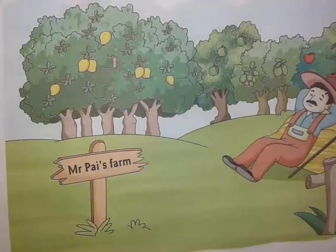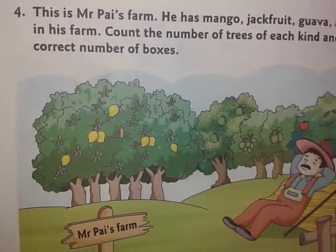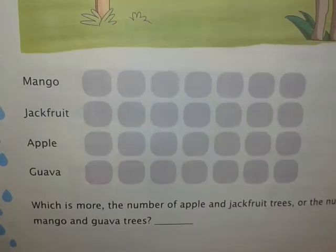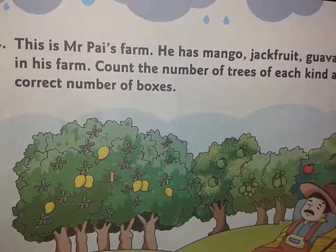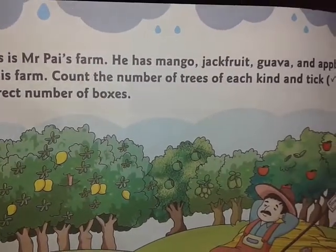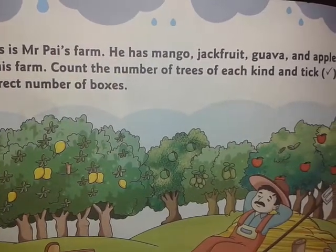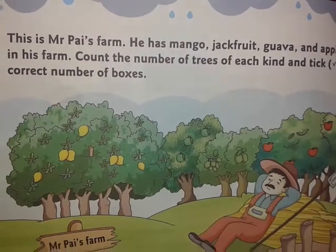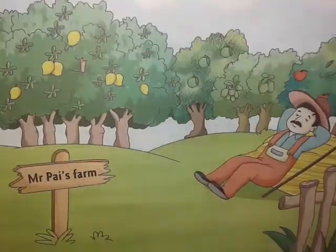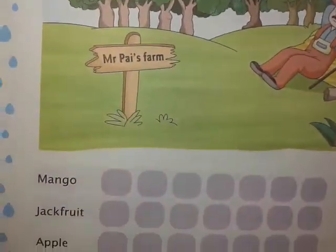Hello students, this is page 158 from your math students book. You can see here a picture of some trees. This is Mr. Pie's farm. He has mango, jackfruit, guava and apple trees in his farm. Count the number of trees of each kind and tick the correct number of boxes.